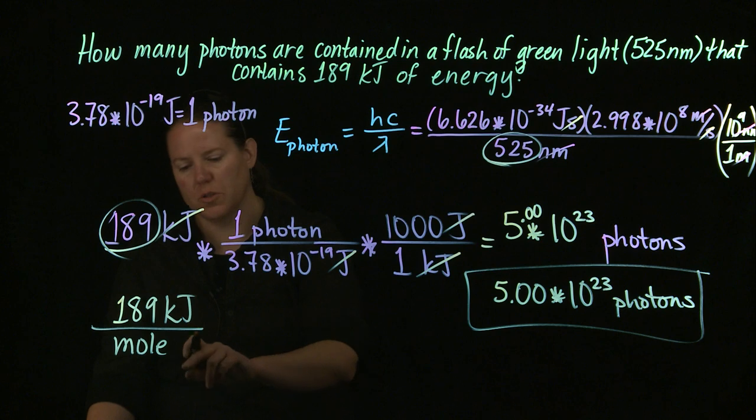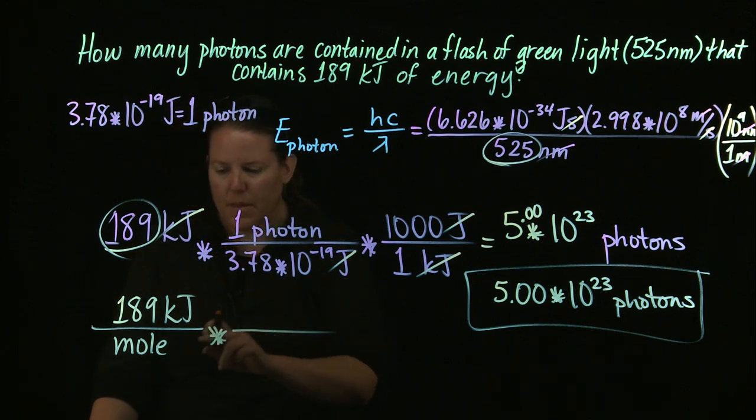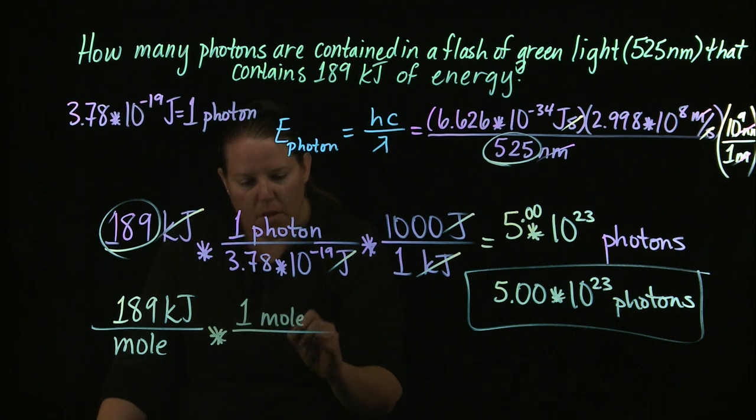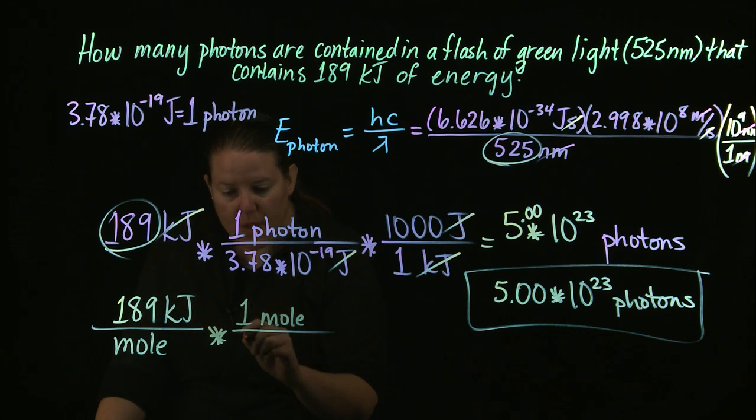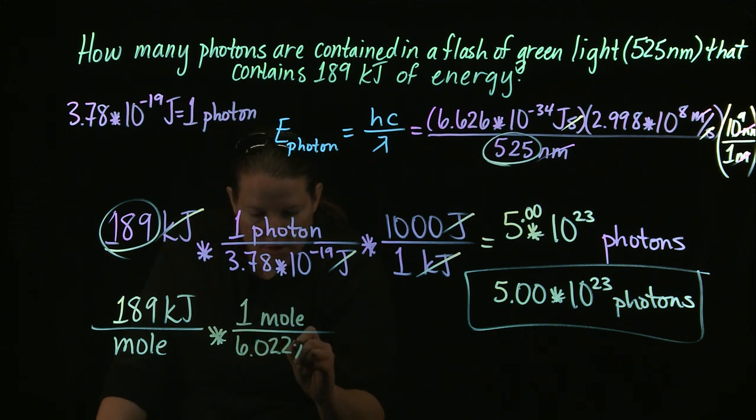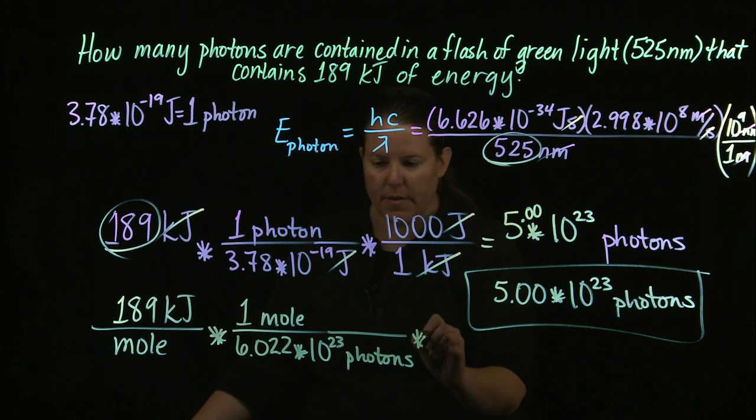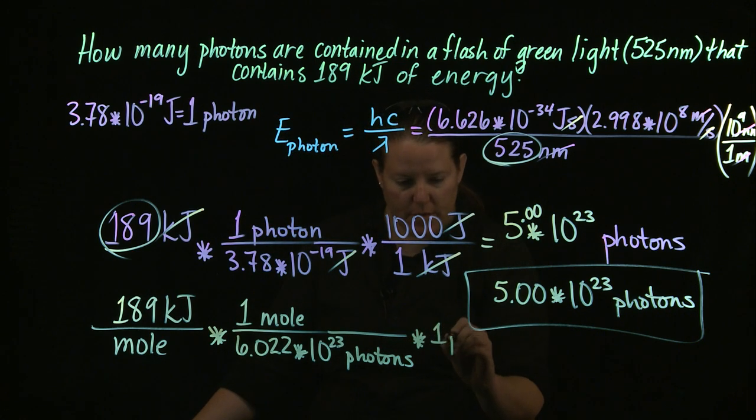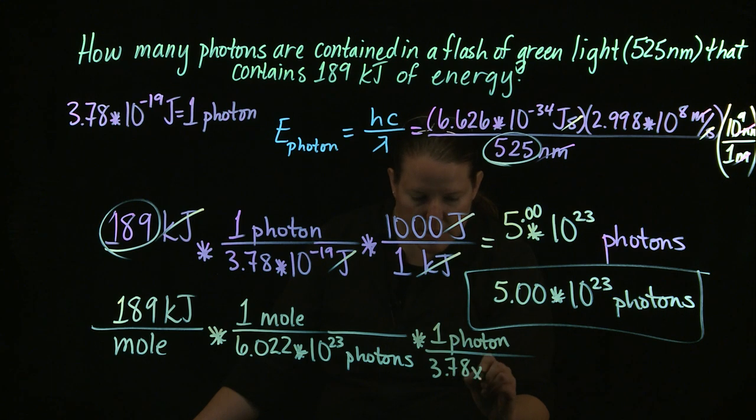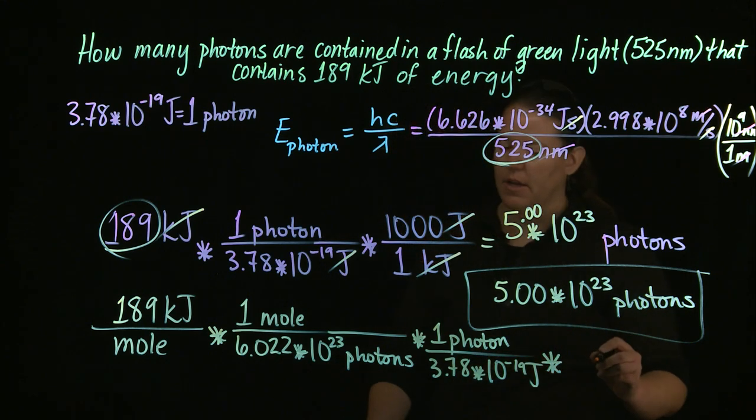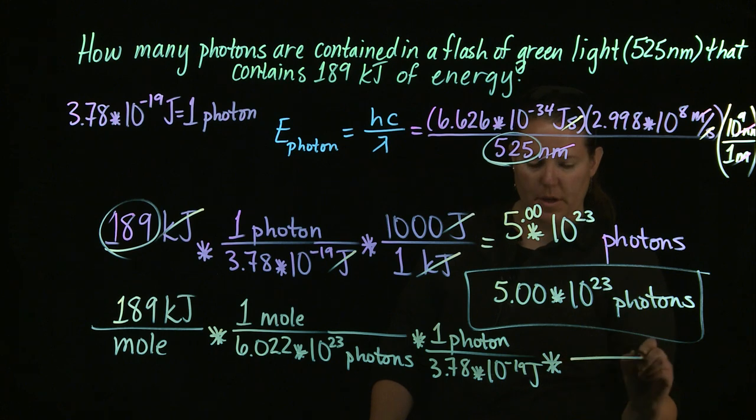So in this case, you could have said, if this was kilojoules per mole, then you could have said that in one mole, there are 6.022 times 10 to the 23rd photons. And then you could have said every time I have one photon, that's the equivalent of 3.78 times 10 to the negative 19th joules.